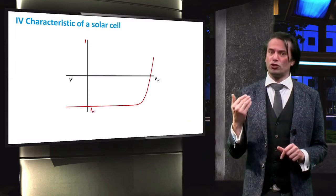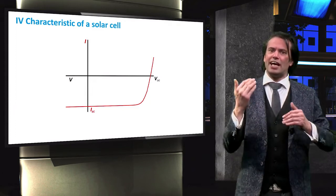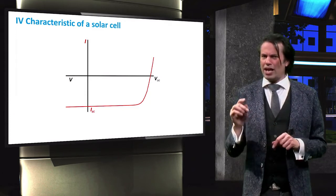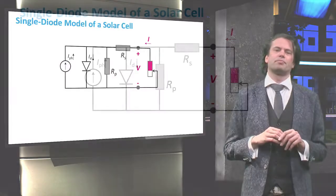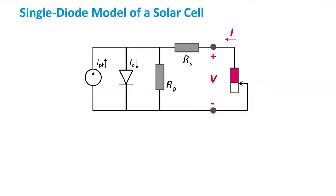However, illumination of the solar cell is what offsets it as we can see here. So let's take a look at how to model this electrically. Here you can see the so-called single diode model for a solar cell. There is a lot going on here, so let's move through our schematic step by step.